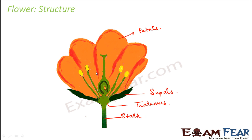If you observe the internal structure of the flower — if you look into the petals and peep into the center between the petals — you can actually see a structure with a swollen base and a tube-like structure at the center. This entire structure is the carpel.